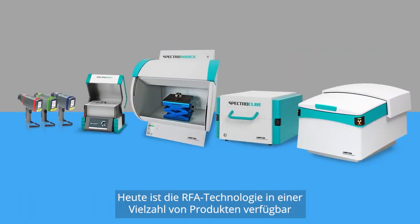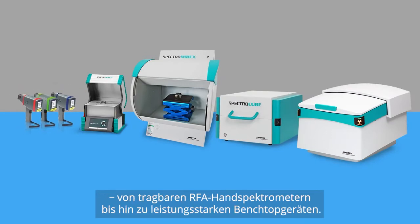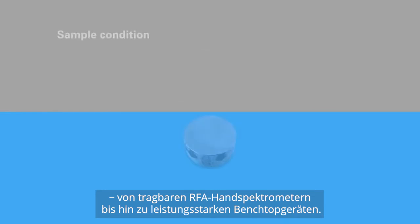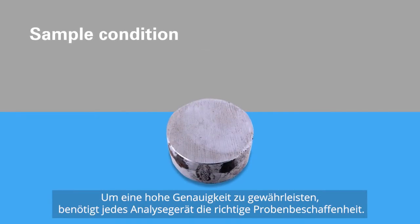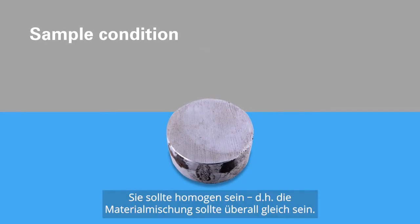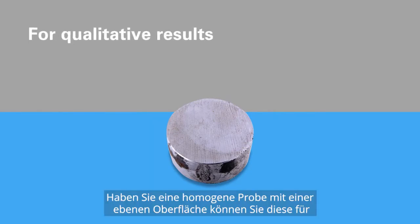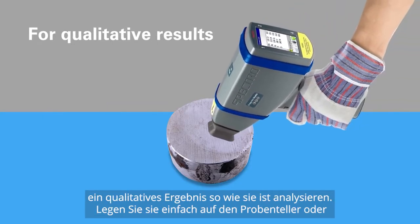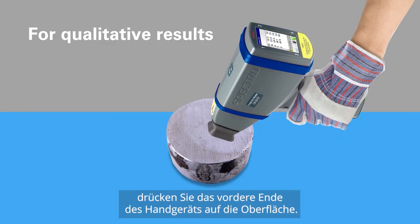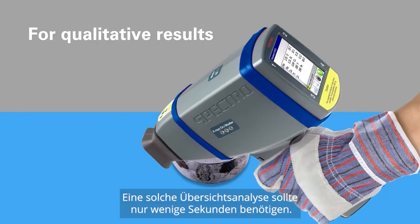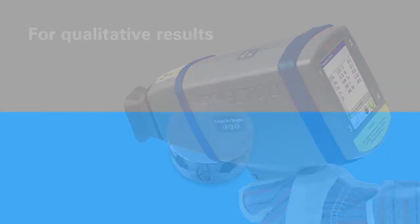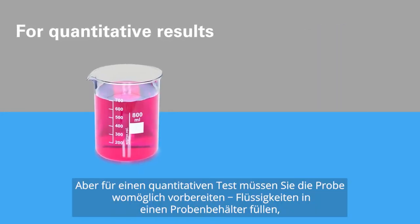Products range from portable handheld XRF guns to high-performance benchtop analyzers. To ensure accuracy, any analyzer needs the right sample condition — it should be homogeneous, meaning the same mixture of material throughout, and it should be representative of the material you're trying to analyze. For a qualitative result, if you have a homogeneous sample with a flat surface, you can test as-is: just place it in the sample tray or press the nose of the handheld unit to the surface. This screening analysis should take only a few seconds.